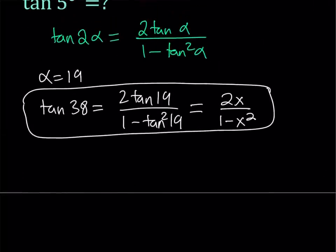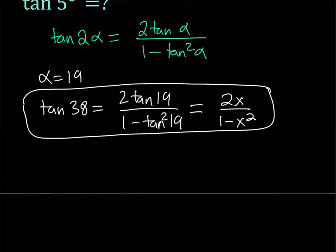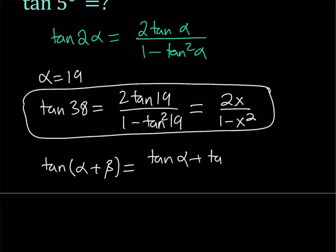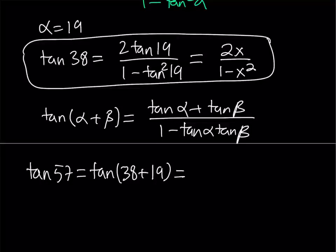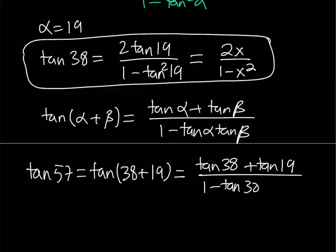The next thing I'm going to do is use the sum formula, since I know both 38 and 19. The sum formula states: tangent of (α plus β) equals tangent α plus tangent β divided by 1 minus tangent α times tangent β. I can write tangent 57 as tangent of (38 plus 19). This is equivalent to tangent 38 plus tangent 19 divided by 1 minus tangent 38 times tangent 19.